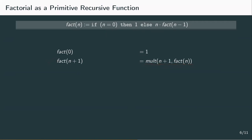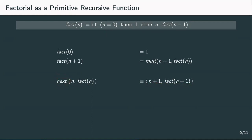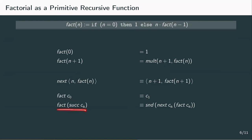The idea is to simulate recursion by constructing a function that, given a pair of church numerals n and factorial n, returns the next pair: n plus 1 and factorial of n plus 1. We call this function 'next'. Starting from the base case, applying next n times should give us the factorial of n in the second component. This only works for primitive recursive functions, since only with those we have a fixed number of recursive calls. So we need to define the base case fact c0 equals c1, and the recursive case fact of the successor of cn, which is the second component of next applied to cn and fact of cn.